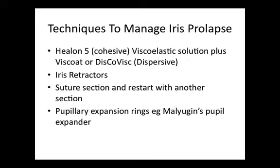Secondly, closing and re-suturing the section is another common treatment. This should be followed by commencing the section elsewhere and recreating the corneal section site to make it longer and more anteriorly placed, to reduce the likelihood of further prolapse.